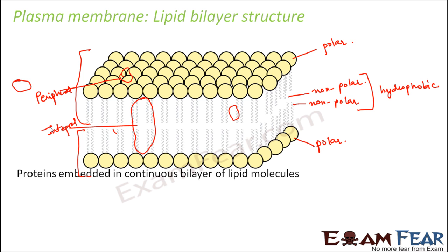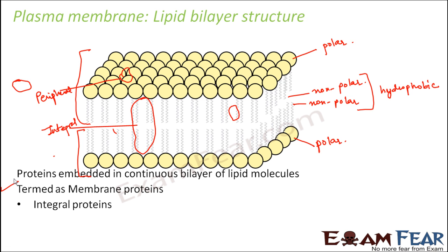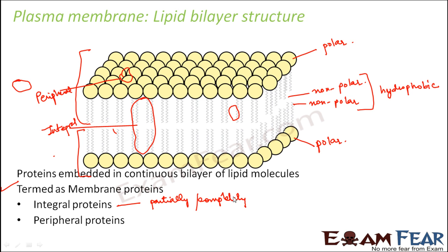So proteins embedded in a continuous bilayer of lipid molecules — these proteins are also known as membrane proteins because they are present in the plasma membrane. Integral proteins are partially or completely buried in the membrane, whereas peripheral proteins are present on the surface of the membrane.